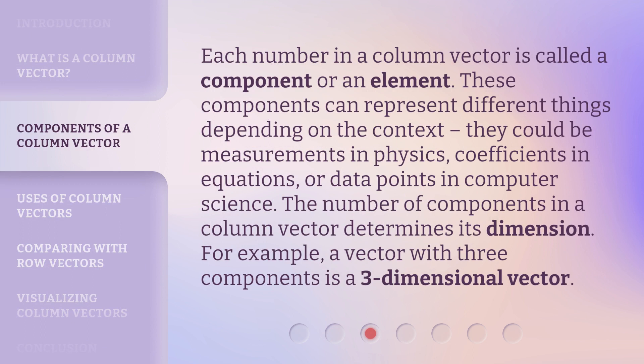Each number in a column vector is called a component or an element. These components can represent different things depending on the context. They could be measurements in physics, coefficients in equations, or data points in computer science.